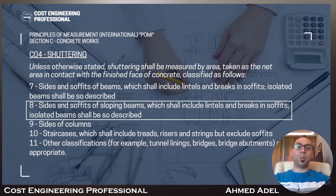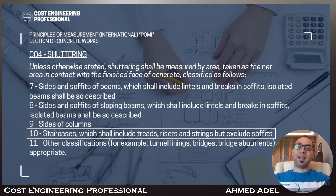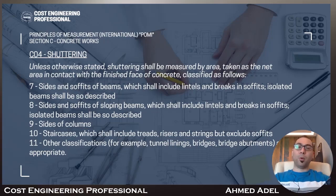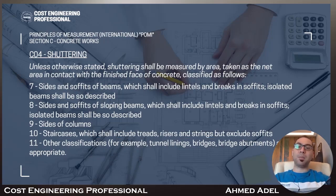Number eight: sides and soffits of sloping beams, which shall include lintels and breaks in soffits — isolated beams shall again be so described. Number nine: sides of columns. Number ten: staircases, which shall include treads, risers, and strings, but excluding soffits since soffits are covered under a previous item.